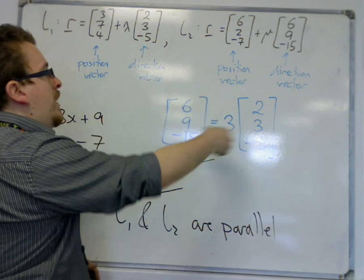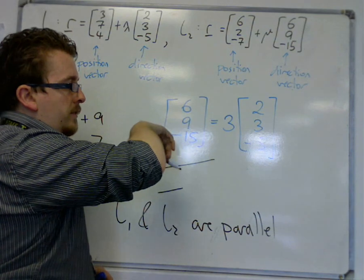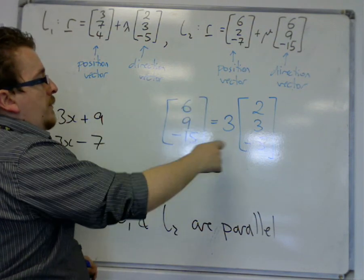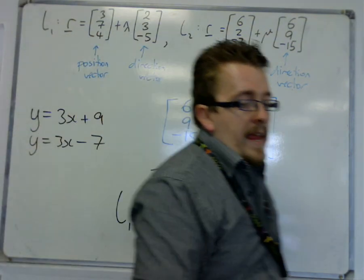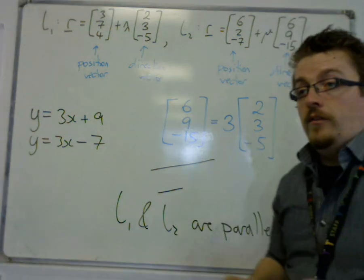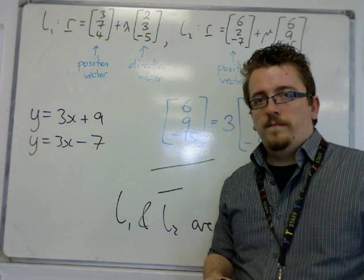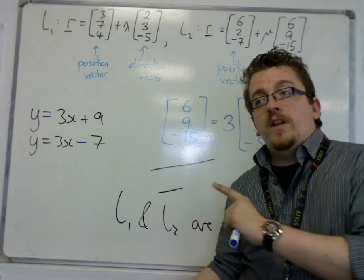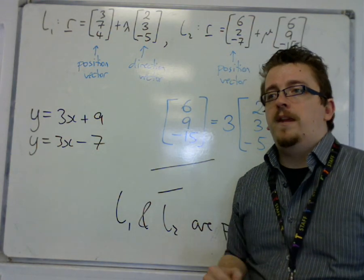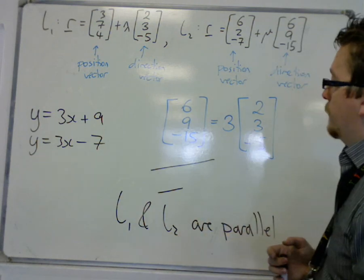If there is no way of writing this, of doing one is a multiple of the other, then that means that the two lines either intersect or they are skew lines. And then we can go back to the two videos that we have previously in this series.